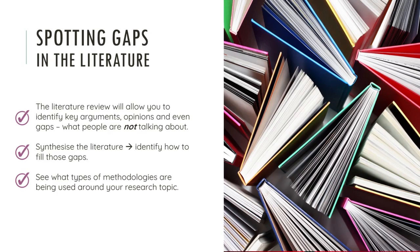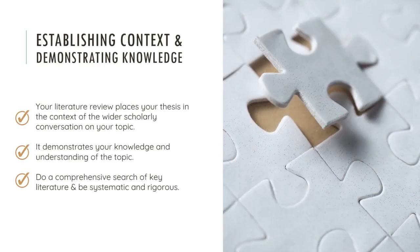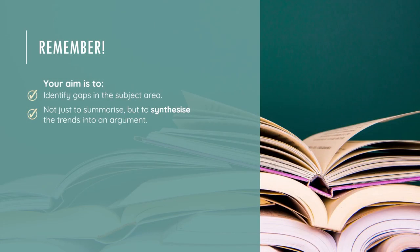See what types of methodologies are being used around your research topic — are they quantitative or qualitative — and what kinds of methods might best fill those gaps? Scoping or reviewing the current literature will give you a place to start establishing context and it will provide a foundation to the research project. It helps to demonstrate your knowledge and understanding of the subject area and places your topic in context. You will want to do a comprehensive search of key literature that relates to your research subject area and to be systematic and rigorous. In summary, your aim is to identify gaps in the subject area and not just to summarise, but to synthesise the trends into an argument.